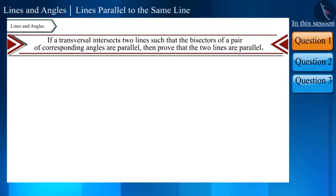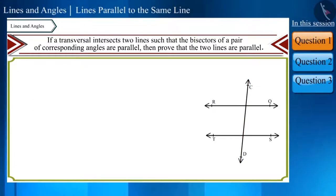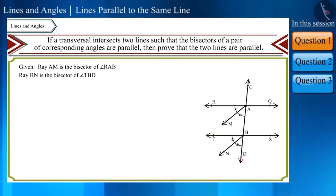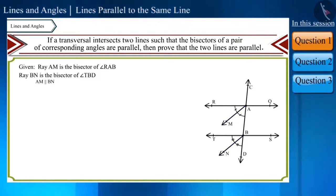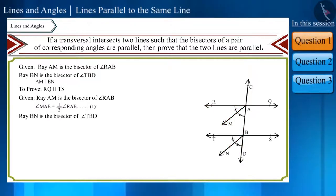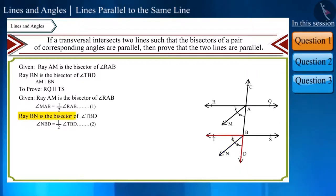Let's draw a figure with the help of the statement. Transversal CD intersects line RQ and line TS at points A and B respectively. Ray AM is the bisector of angle RAB, and ray BN is the bisector of angle TBD. According to the statement, ray AM and ray BN are parallel, and we have to prove that lines RQ and TS are parallel. Ray AM is the bisector of angle RAB — we can write angle MAB — and similarly we can write angle NBD, as ray BN is the bisector of angle TBD.